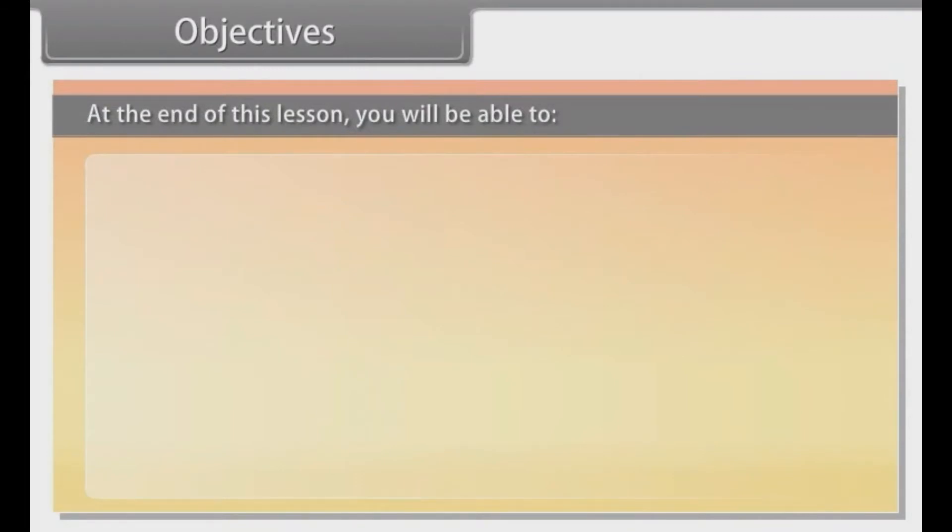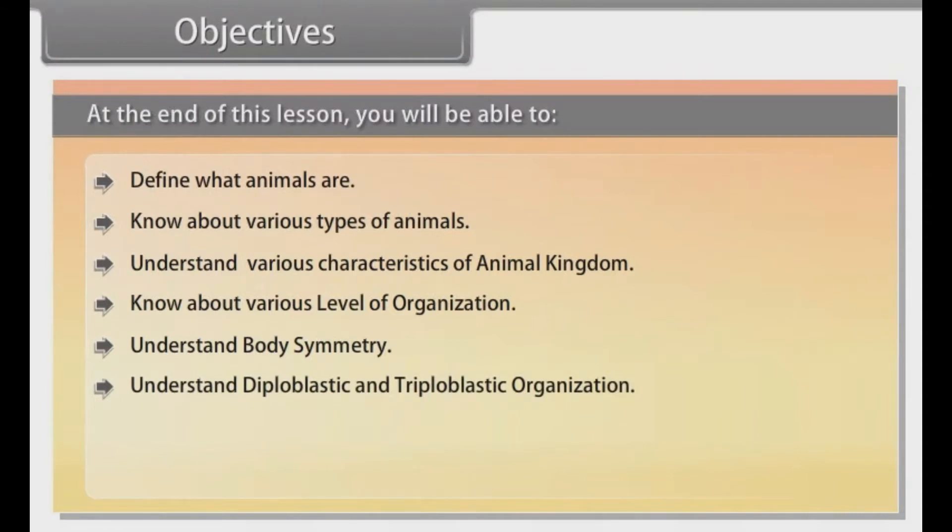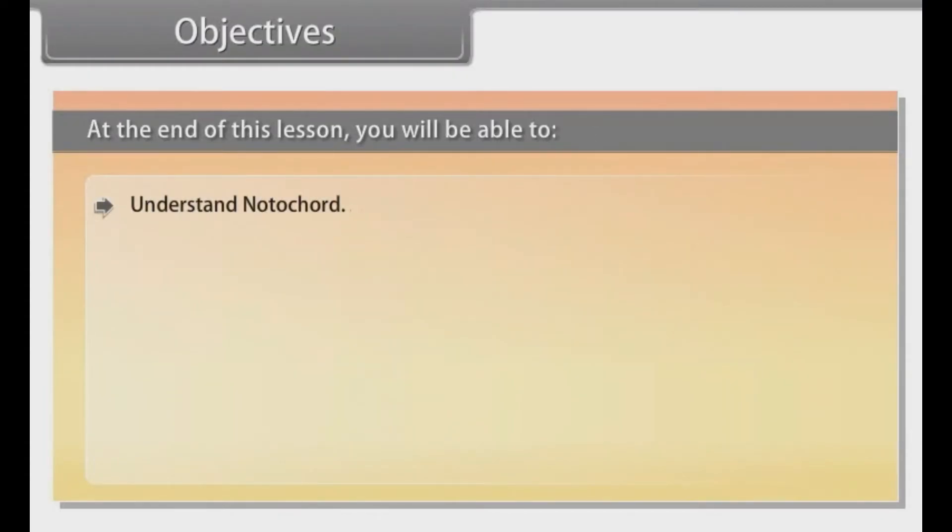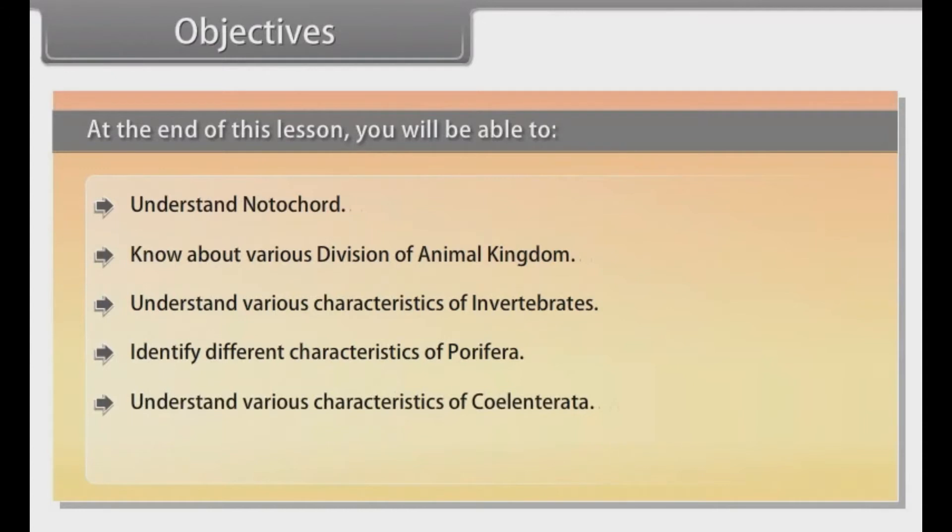Objectives. At the end of this lesson, you will be able to define what animals are, know about various types of animals, understand various characteristics of animal kingdom, know about various level of organization, understand body symmetry, understand diploblastic and triploblastic organization, know about coelom, understand segmentation, understand notochord, know about various division of animal kingdom, understand various characteristics of invertebrates, identify different characteristics of porifera, understand various characteristics of coelenterata, and identify different characters of ctenophora.